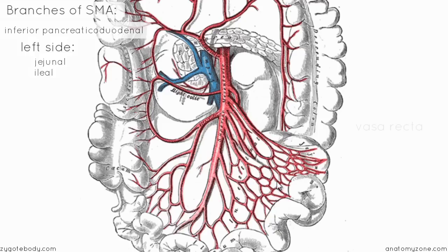These straight vessels are called vasa recta. In Latin, vasa means vessels and recta means straight. You also have vasa recta in the kidney — it simply means straight vessels. So the distal vessels are called vasa recta.